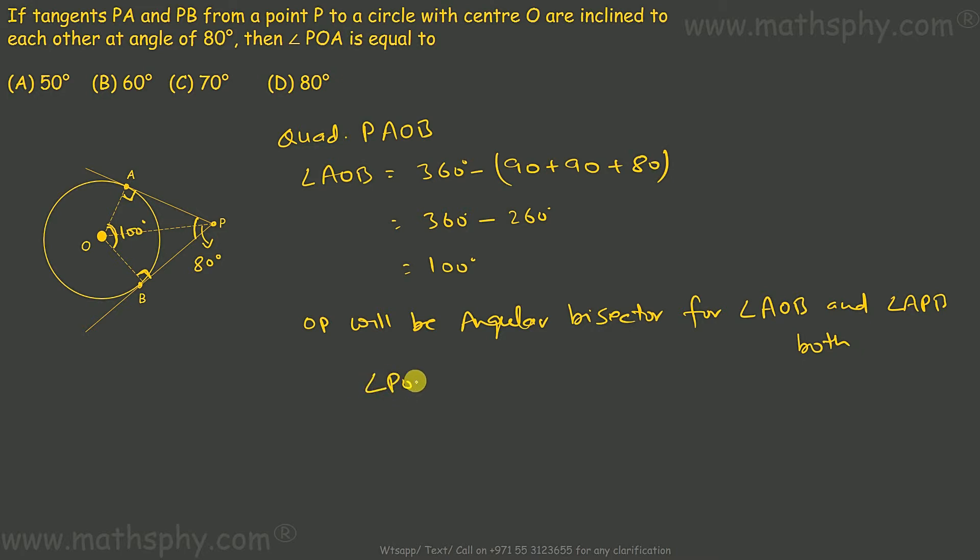So in that case, angle POA will be equal to angle POB. Angle POA plus angle POB, putting together they give you angle AOB which is 100 degrees. Angle POA plus, in place of POB, let's write angle POA because they are equal, which is 100 degrees. So angle POA would be 100 over 2 degrees, 50 degrees.